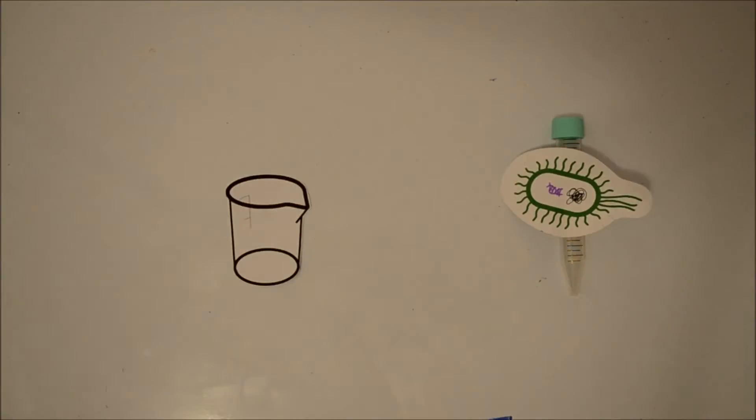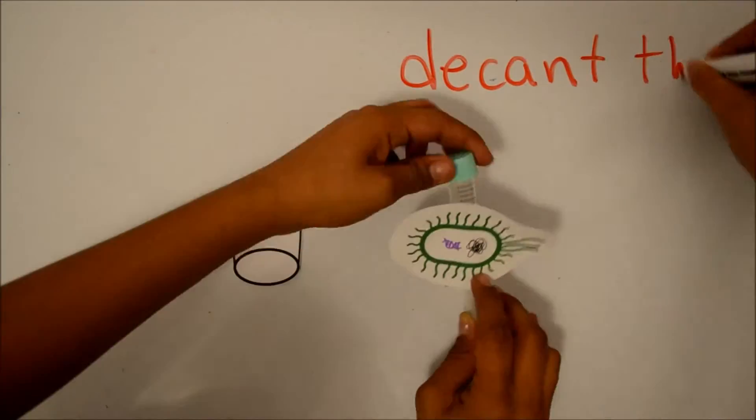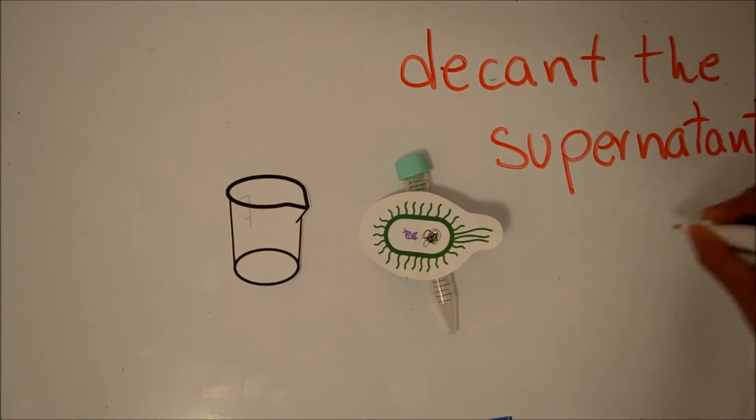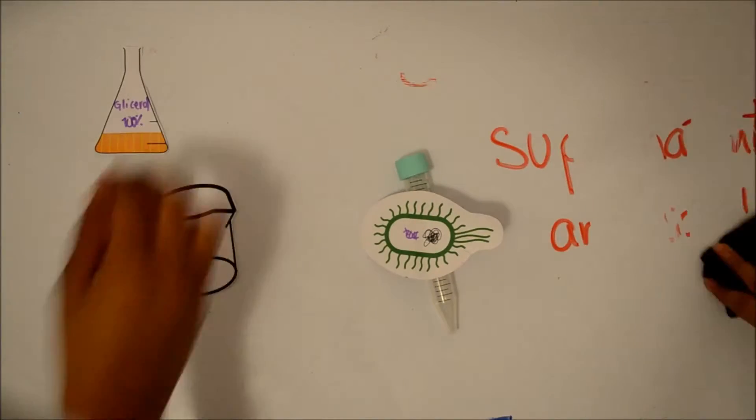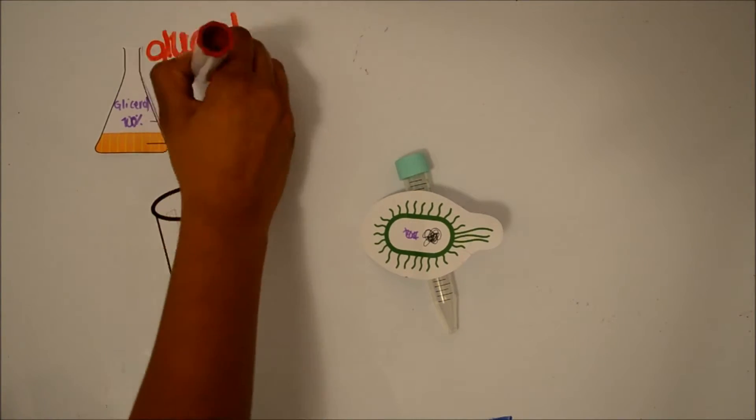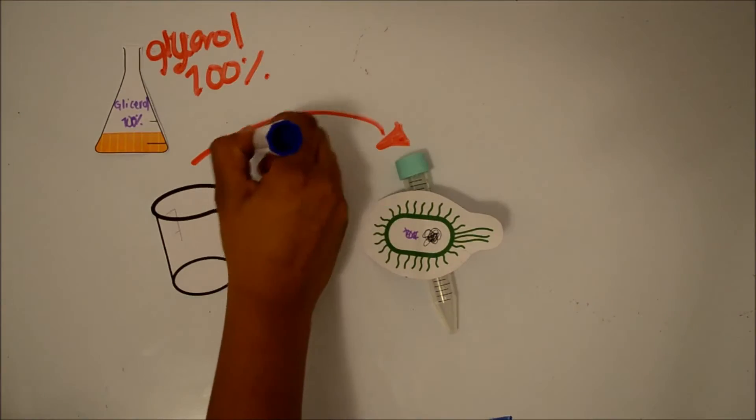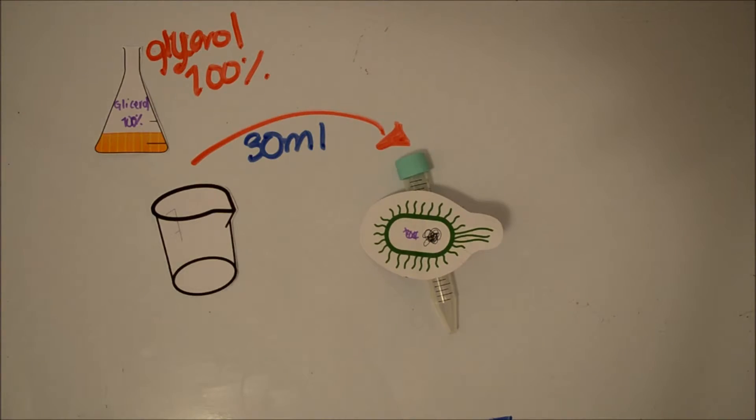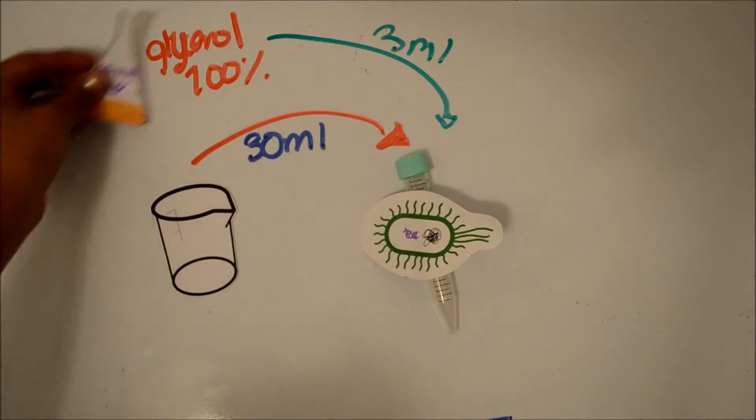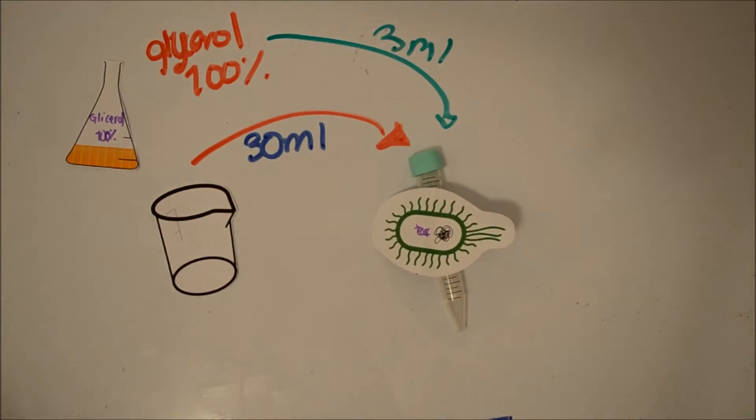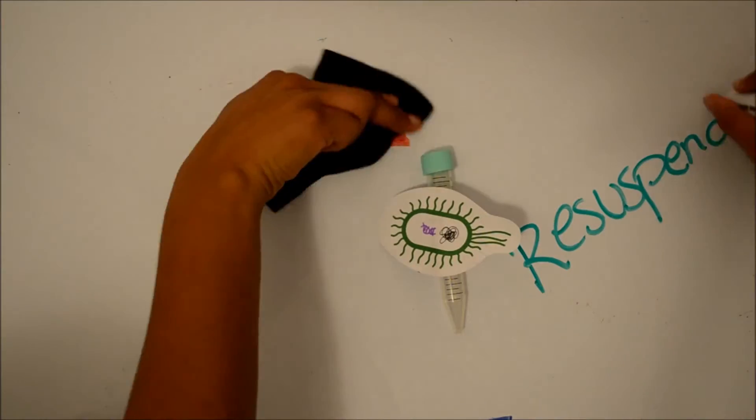Carefully decant the supernatant into a sterile container and save. Gently resuspend the cell pellet in 30 ml of the saved supernatant and add 3 ml of sterile glycerol to 10% concentration. Mix gently.